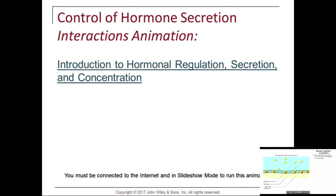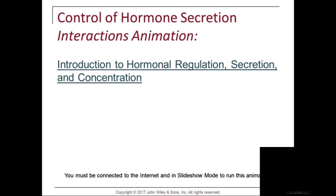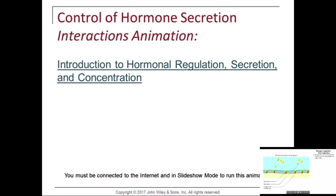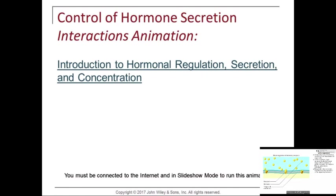Target cells will be understimulated if hormone levels are low. In a response called up-regulation, target cells compensate by producing more receptors, increasing their sensitivity. Overproduction of hormones results in overstimulation. In this situation, high hormone levels cause target cells to produce fewer receptors — this is called down-regulation. Think of insulin resistance: target cells that are down-regulated are less sensitive to the signaling hormone.